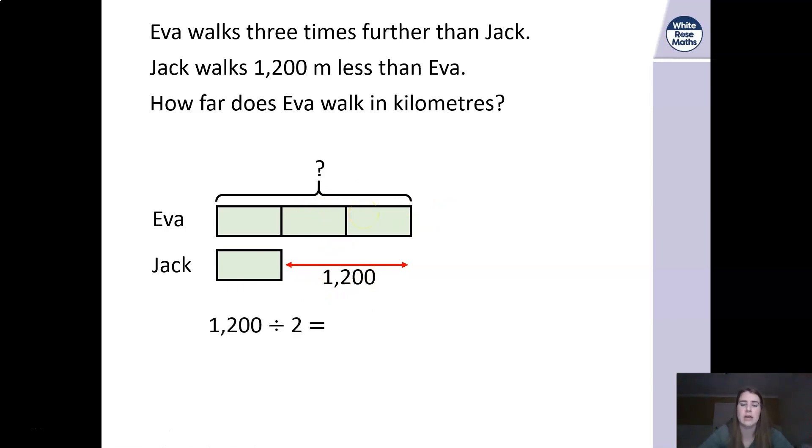So if we've got 1,200 meters here and we've got these two boxes, what are we going to do? Good, we're going to divide it. So again if you think about it, 12 divided by two, that's going to be our six, add the two zeros, 600. Each one of those boxes is now worth 600. So between all four of them is going to be 600. So then to work out how much Eva walks we're just going to multiply that by three. Three times six is 18, add the zeros, it's 1,800. If we then converted that into kilometers, that's going to give us 1.8.